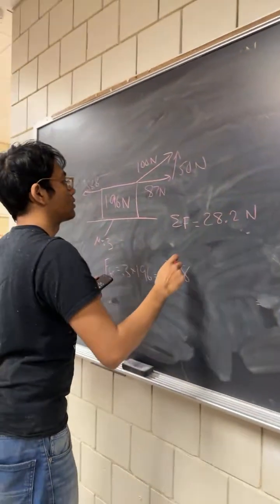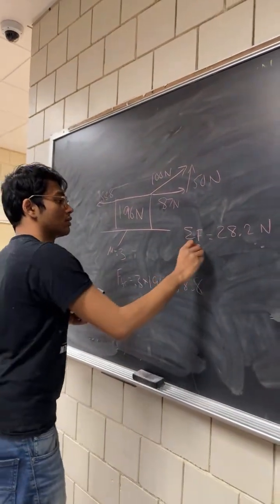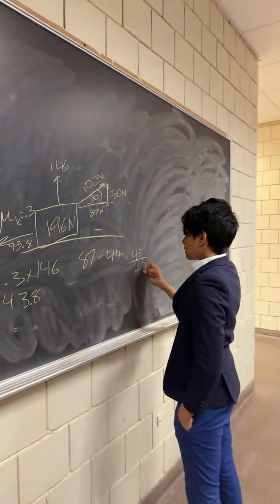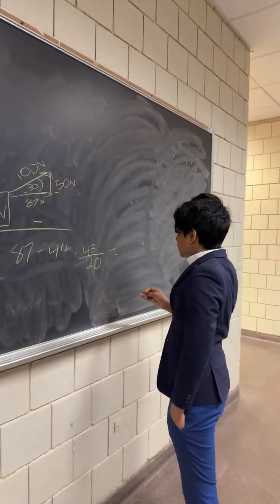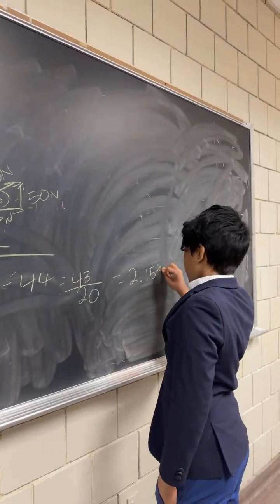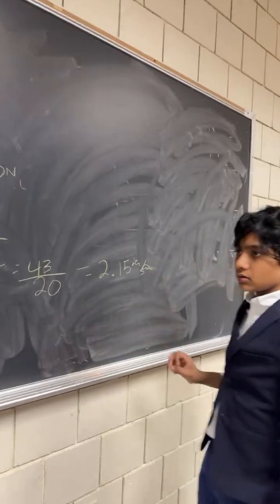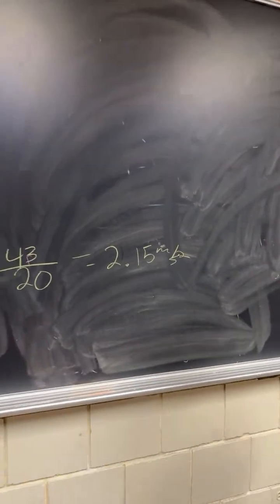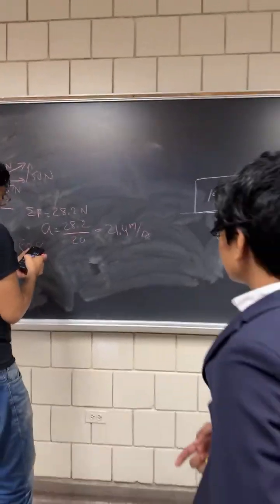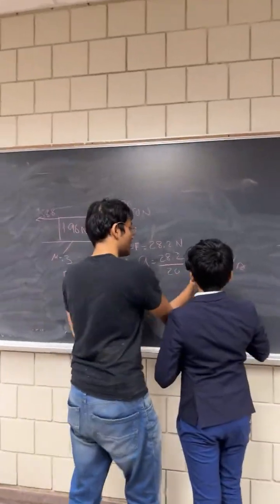That minus that, which is equal to that, and then you divide it by that to get the acceleration, which is equal to that. Is that correct? That's 21.4. So, I'm pretty sure you're an order of magnitude off. Yeah, yeah, it's 2.14. Only 2.14.